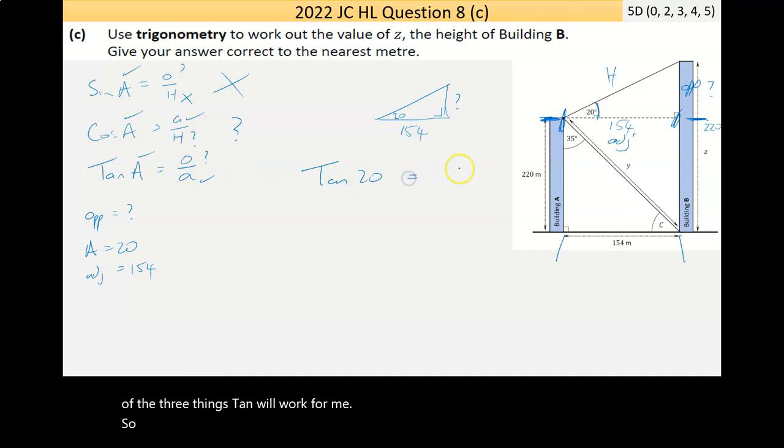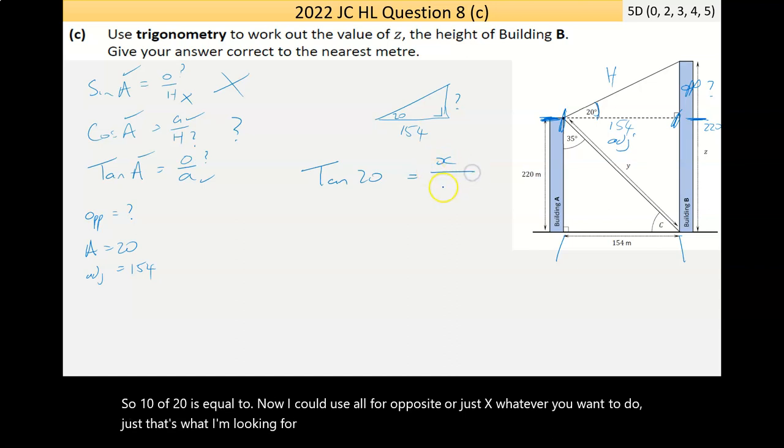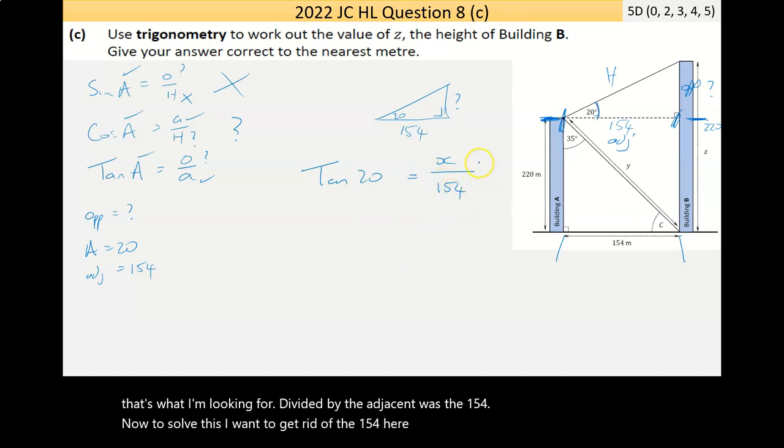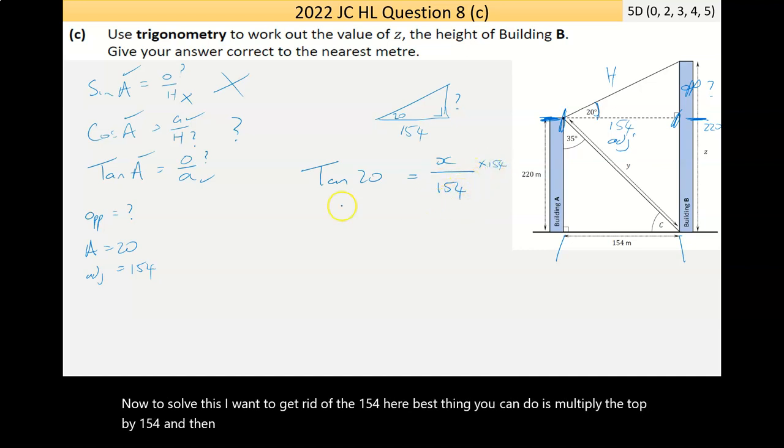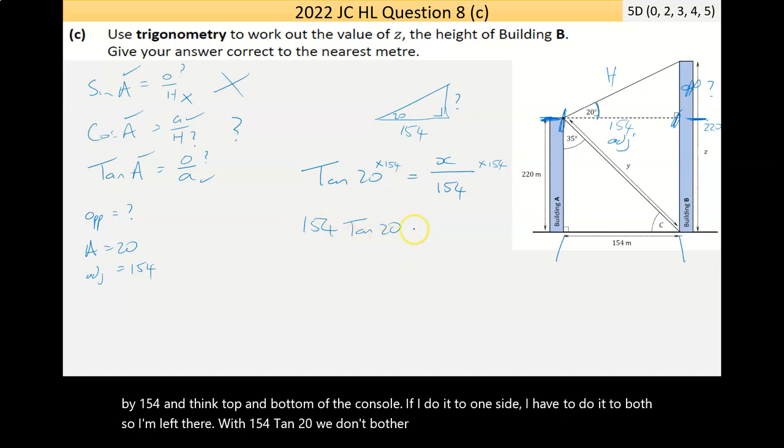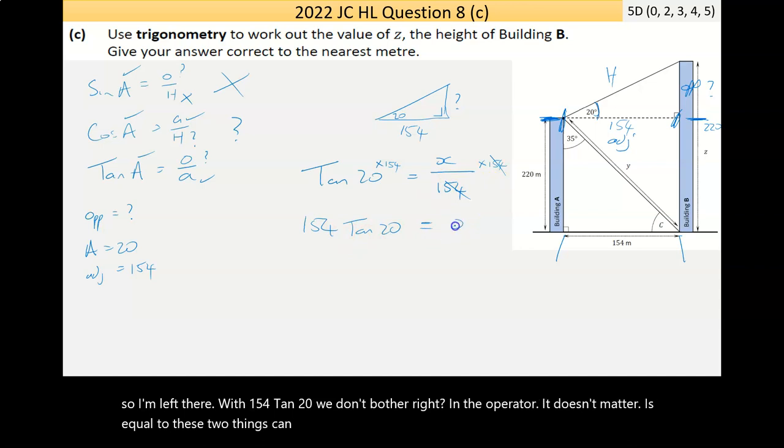So, tan of 20 is equal to, I could use O for opposite or just X, whatever I want to do. That's what I'm looking for. Tan of 154 divided by the adjacent was the 154. Now, to solve this, I want to get rid of the 154 here. Best thing I can do is multiply the top by 154. Anything top and bottom will cancel. If I do it to one side, I have to do it to both. So, I'm left there with 154 tan 20. Now, we don't bother writing the operator. We could. It doesn't matter. Is equal to, these two things cancel, is equal to X.